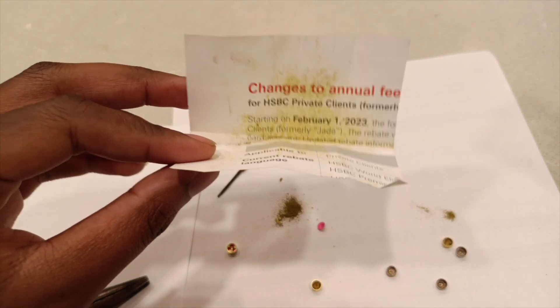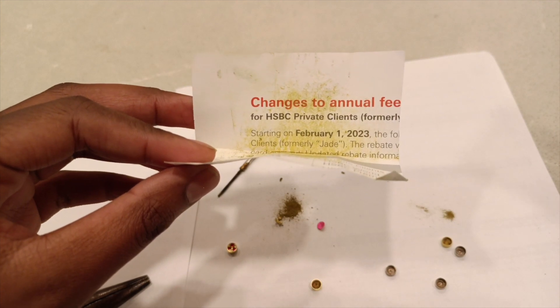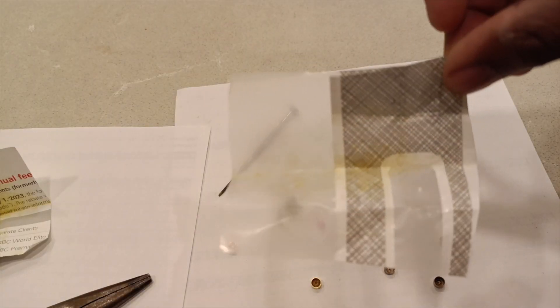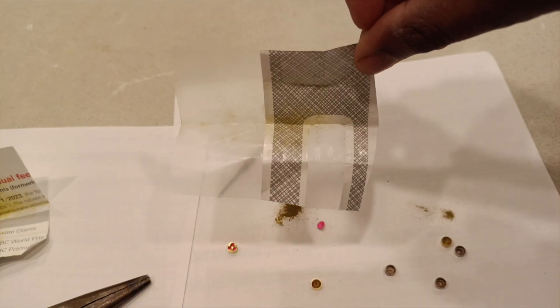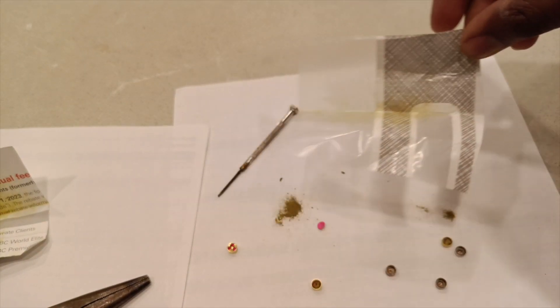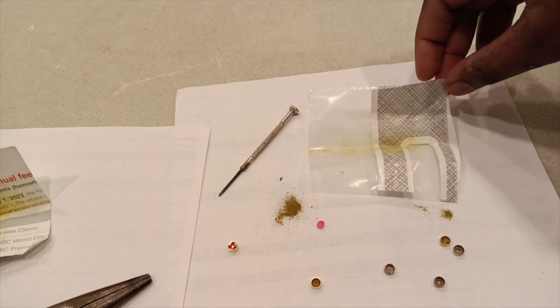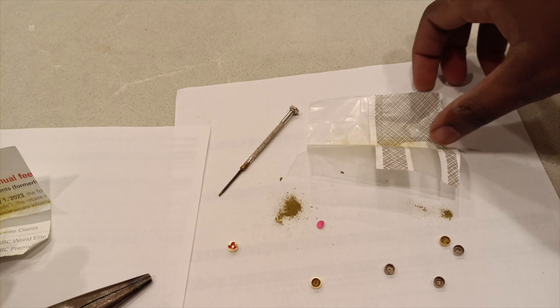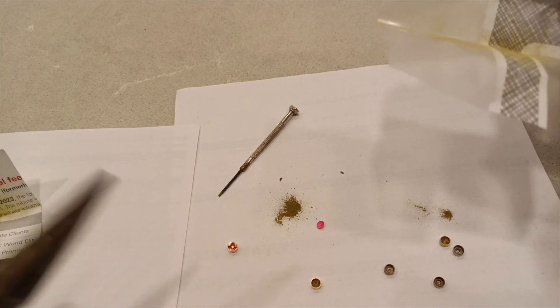As you can see, residue does get stuck on there. If you use a regular piece of paper, there's way more residue stuck on there. Even if you use a card to scrape the powder, you do still lose a little bit of residue. When using something like this, the residue still does get stuck on there, but it's not as drastic.